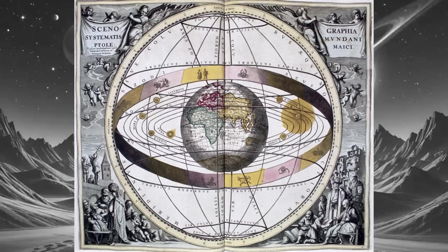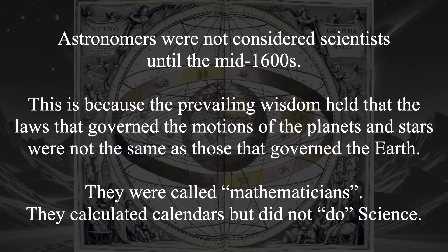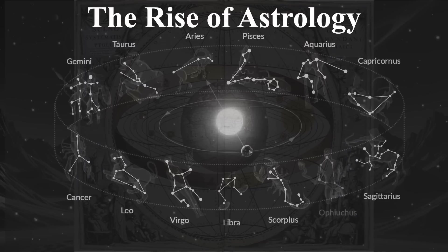People who studied the stars weren't called astronomers or scientists or physicists — they were called mathematicians. They calculated things: the length of the day and the length of the year. The principal reason for studying the stars was calendars — so you knew when to plant things and when important annual or monthly events would occur. If you were making calendars, you would notice that important events happened at certain times, and if those events coincided with the apparent positions of things in the sky, then they might be related.